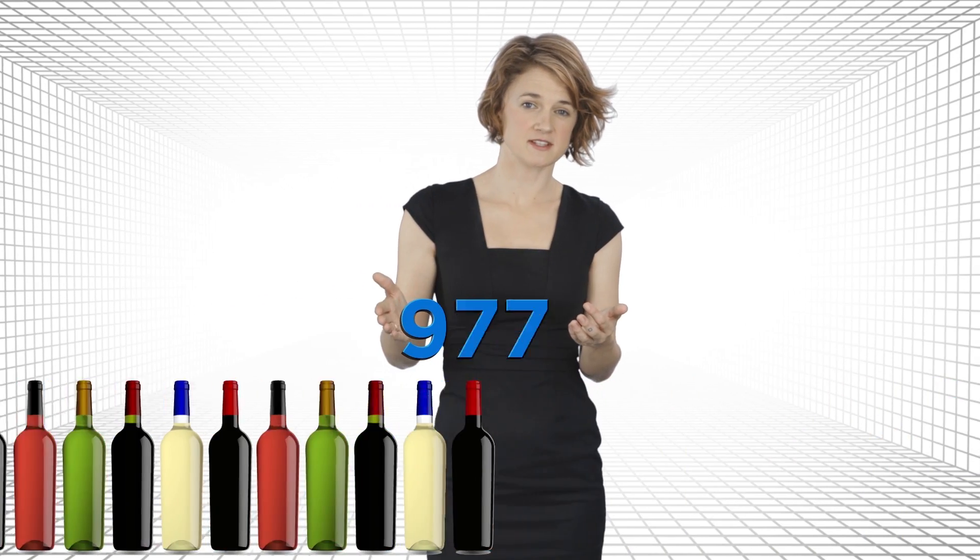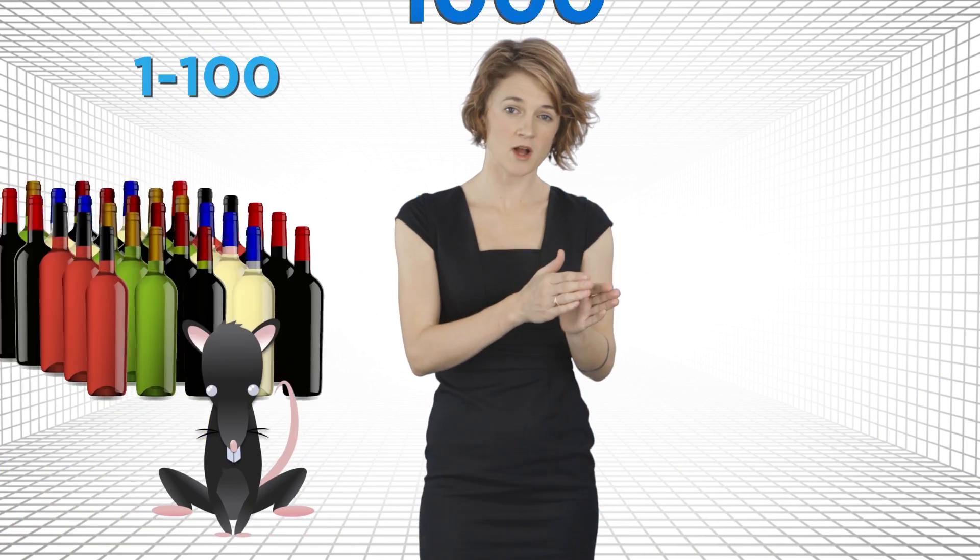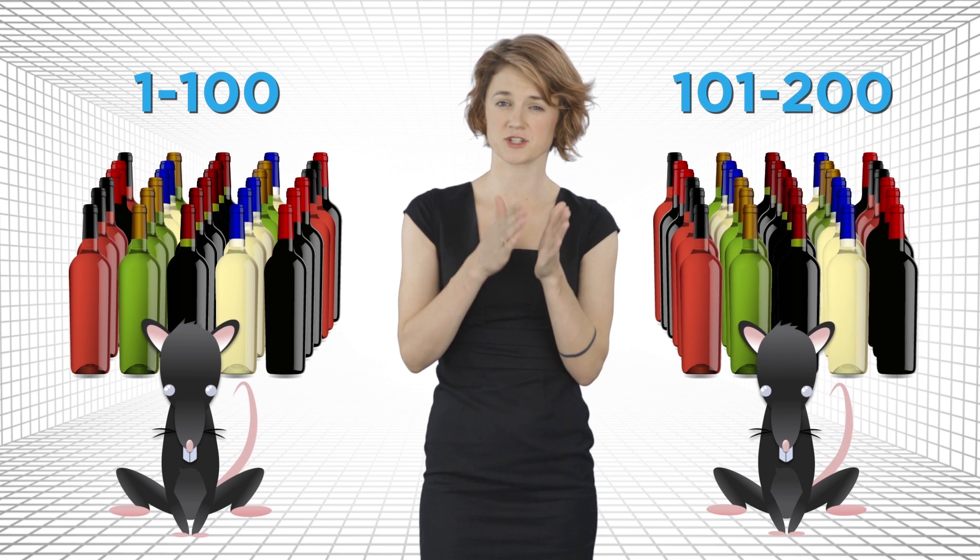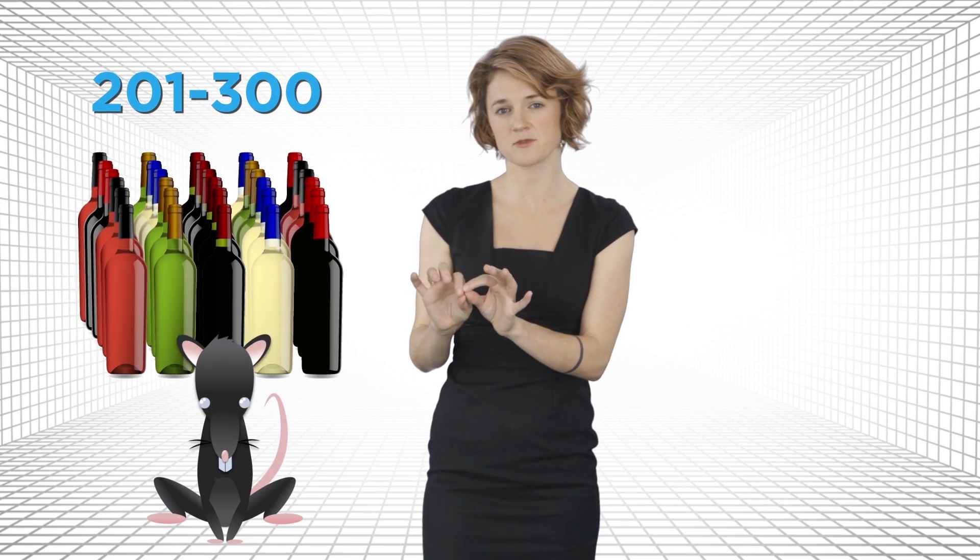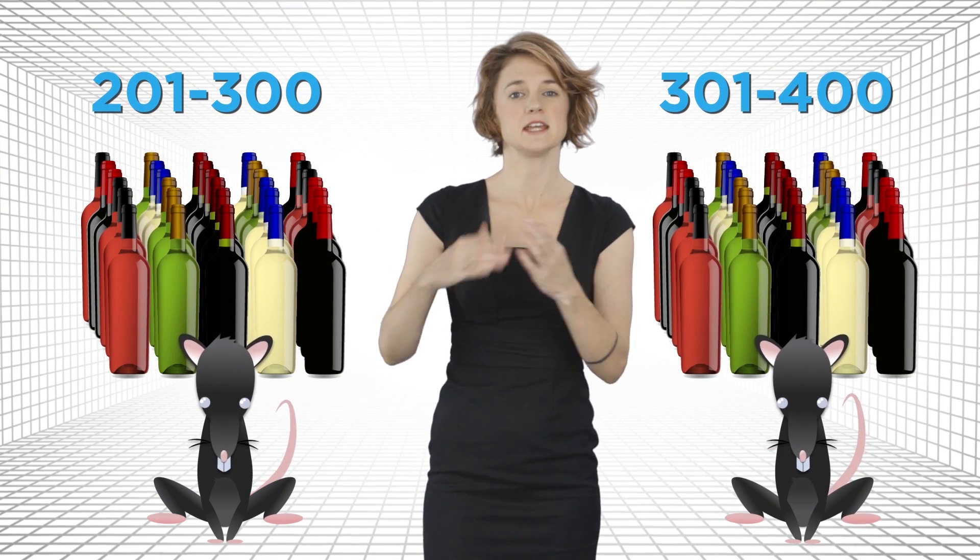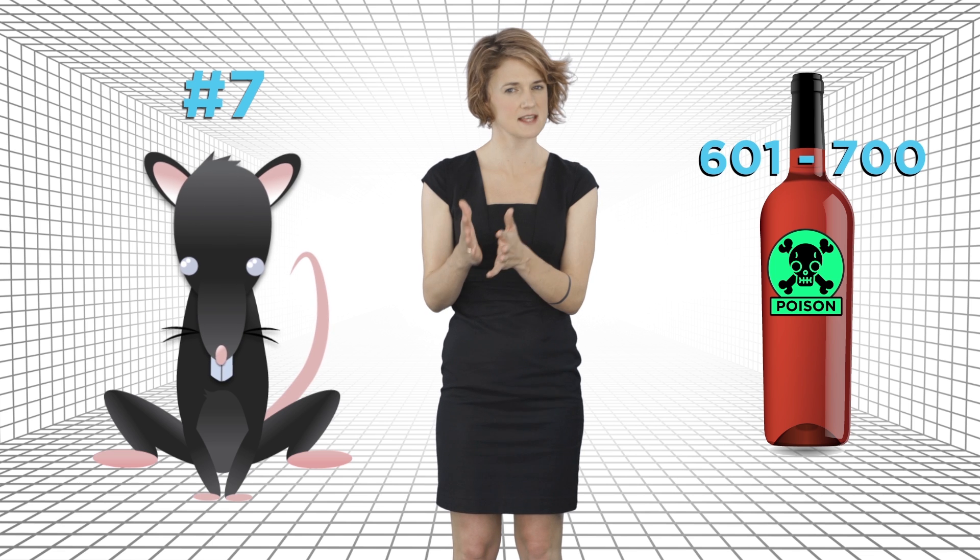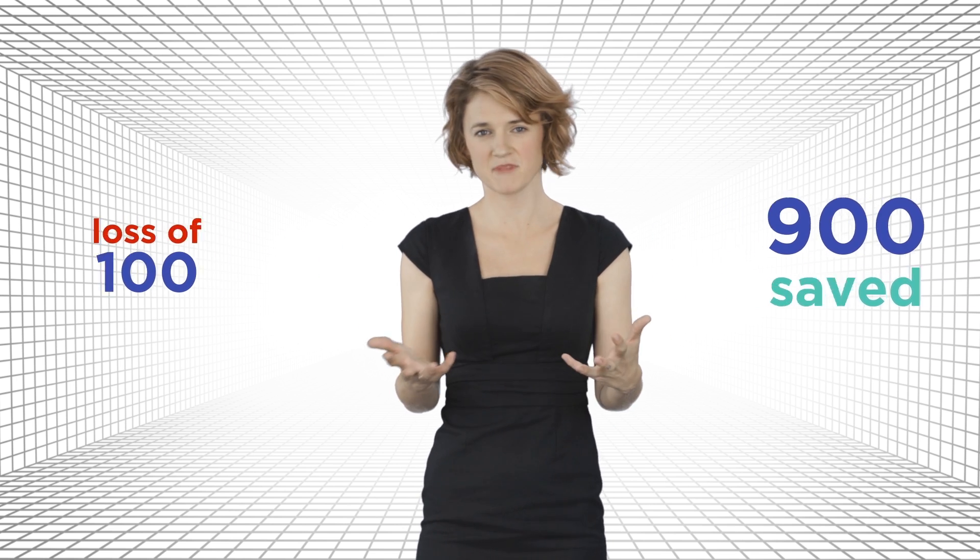Well, here's my first suggestion. Number the bottles one to a thousand. Feed the first rat wines number one to a hundred. Feed the second rat wines number a hundred and one to two hundred. The third rat gets wines two hundred and one to three hundred and so on. Each of the ten rats samples from a hundred bottles of wine. This way, if the seventh rat dies, you know that the poison bottle is numbered between six hundred and one and seven hundred. Using this strategy, you can confidently narrow it down to a hundred possible bottles of wine. So you throw away a hundred, but you save nine hundred. Not bad.